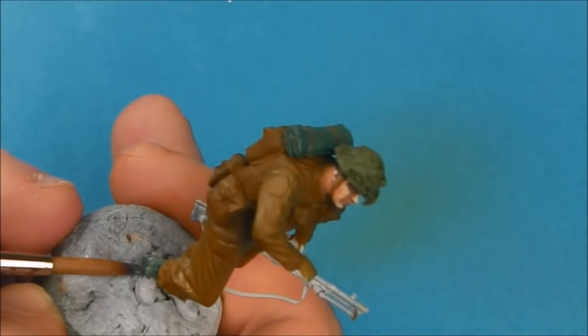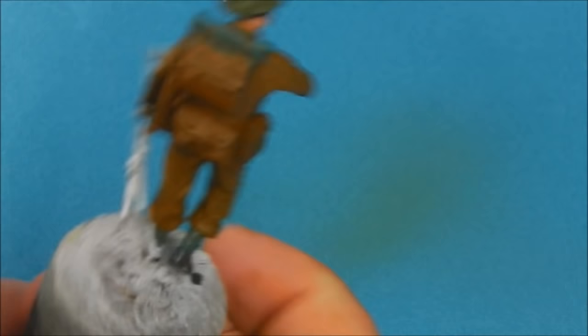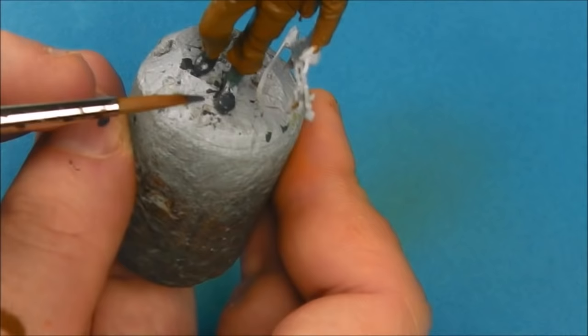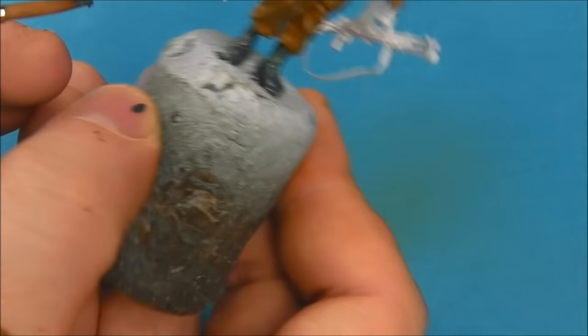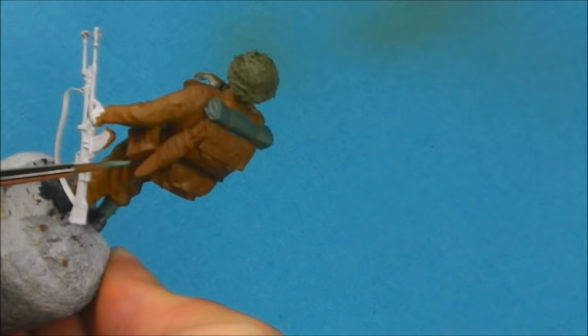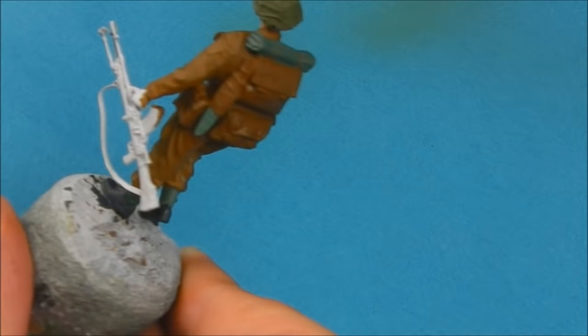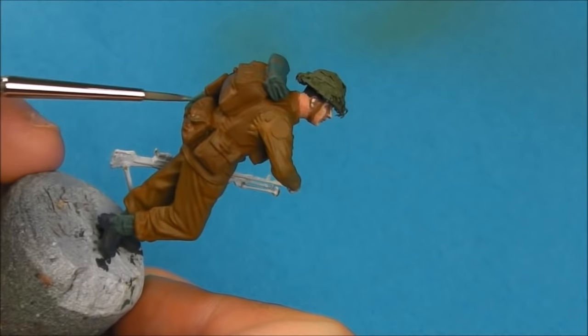Since we're working on his gaiters, I'm just going to take some German grey and base coat his boots. Again, just doing some careful brushwork here just to keep it in the lines. I'm also just going to take a little bit of that German uniform color again from Vallejo Model Colour and paint in the scabbard for his assault or combat saw. I believe that's what type of weapon or tool that is.